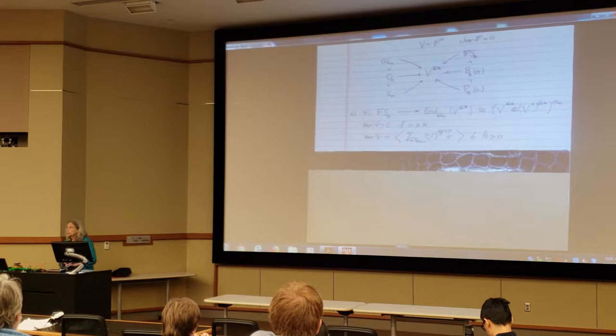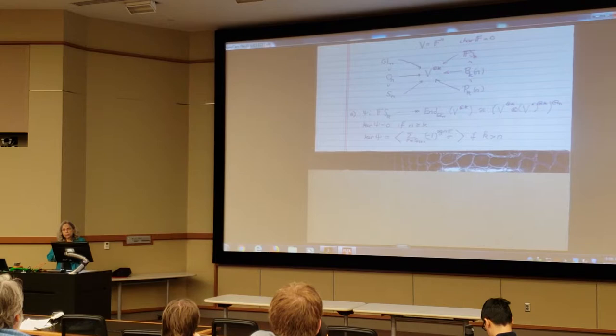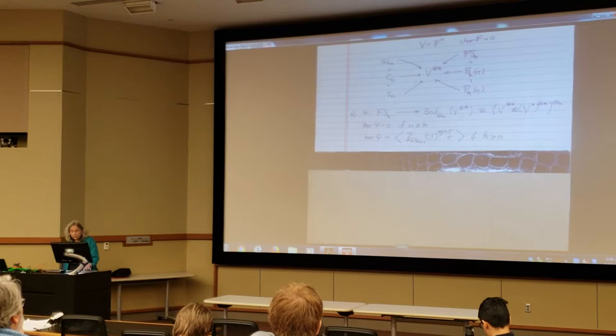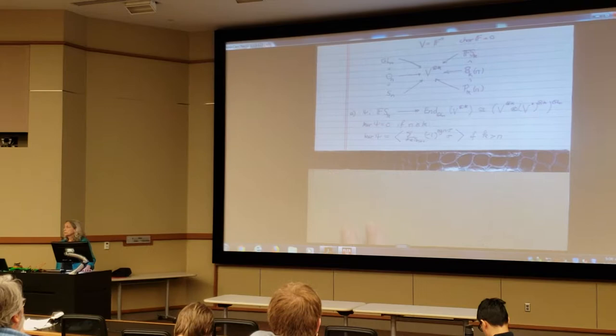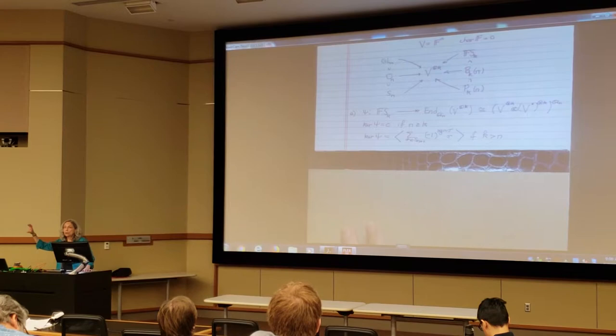If N is not bigger than K, in other words if K is bigger than N, which is probably more what you would think because you're fixing the group SN and you're letting K get larger and larger, then you do get a kernel, and the kernel is generated by this one essential item, the anti-symmetrizer. That's the same one you just consider an embedded kernel. This is the first place the kernel occurs.